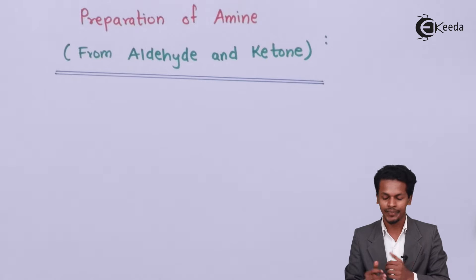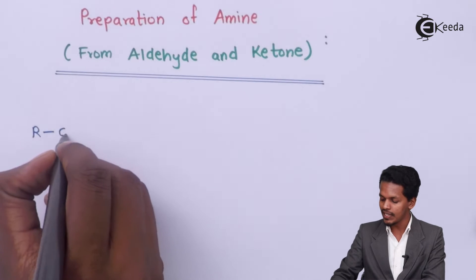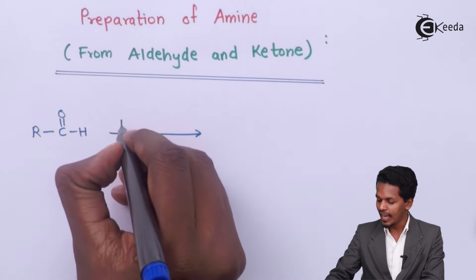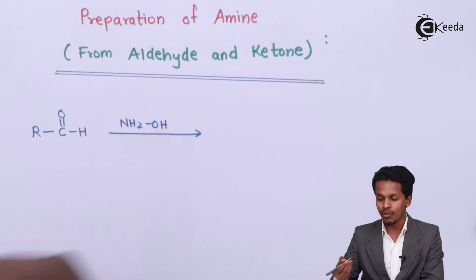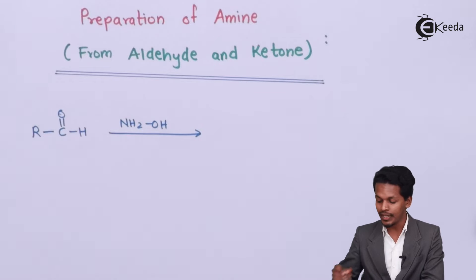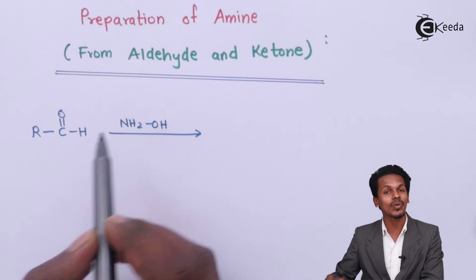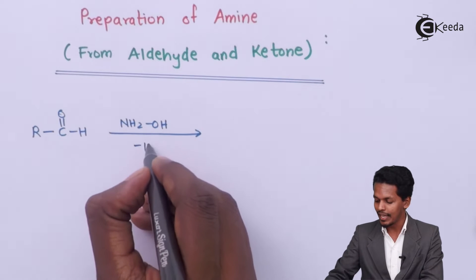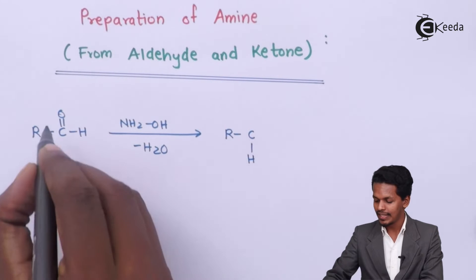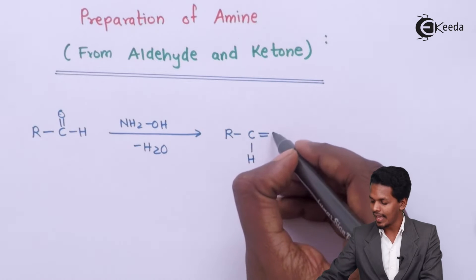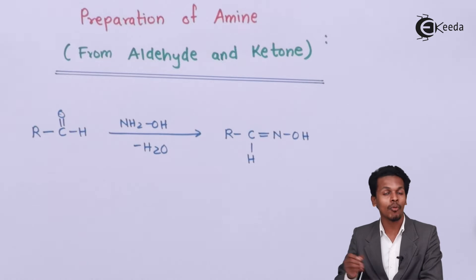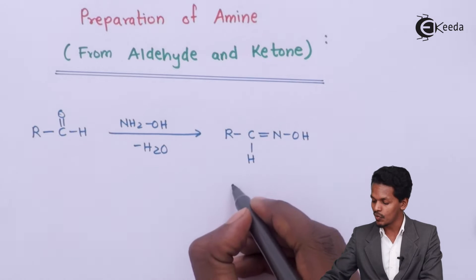Let me talk about how we can convert aldehyde into amine. The general formula for aldehyde is RC double bond O. Suppose this aldehyde is treated with NH2OH, which is basically known as hydroxylamine. When hydroxylamine reacts with aldehyde, the oxygen of the carbonyl reacts with H2 and they are removed as water (H2O). The product we get is RCH double bond NOH. This is an oxime, and since it is obtained from an aldehyde, it is called an aldoxime.